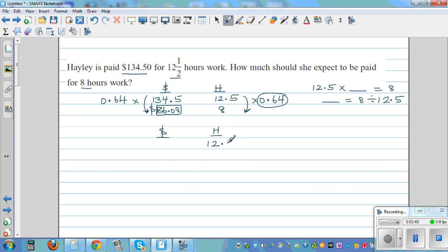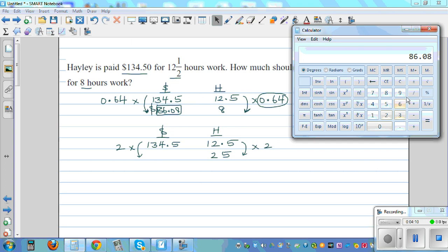If you got 12 hours, she is getting $134.50. So for 25 hours, what's happening here? This is times it by 2, so this is also times it by 2. So $134.50 times 2 is $269.